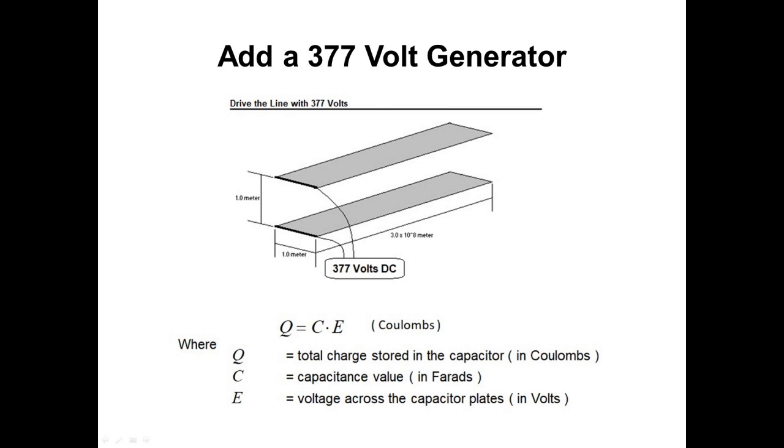If a 377 volt DC generator is connected to one end of this line, a charging current will surge along the line and completely charge the entire line in exactly one second of time. When that occurs, the resulting charge in coulombs stored in this capacitor can be found with this equation. Q equals C times E, expressed in coulombs. Where Q is the total charge stored in the capacitor in coulombs, C is the capacitance value expressed in farads, and E is the voltage across the capacitor, expressed in volts. In this case, the total charge will be 3.7 times 10e plus 2 volts, times 2.655 times 10e minus 3 farads. These numbers yield a total charge of 1.00 coulombs.